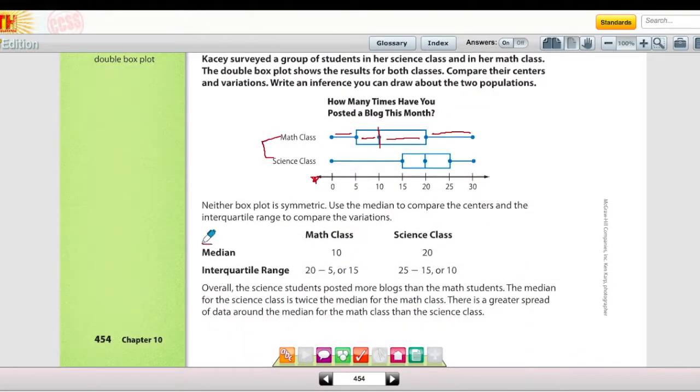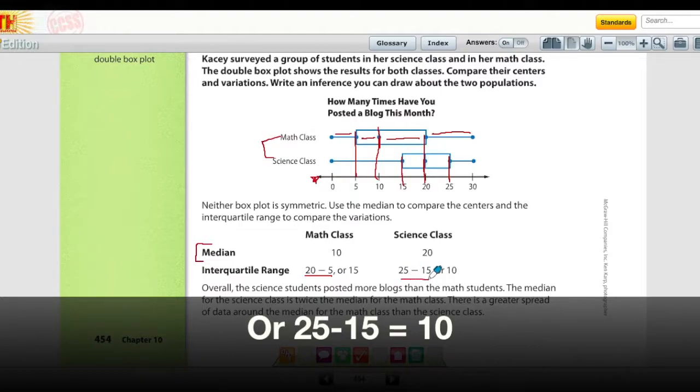Notice on this example, the median is found for both the math class and the science class. That's pretty easy to find right here using the number line: 10 for the math class, 20 for the science class. Then the interquartile range is using these numbers right here, 5 and 20 for the math class, 20 minus 5 is 15. For the science class, there's 15 and 25, 25 minus 15 is 10.